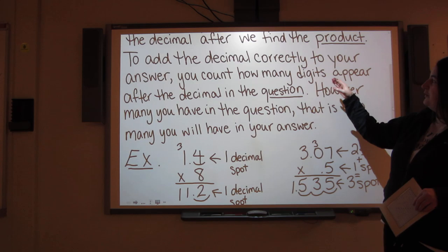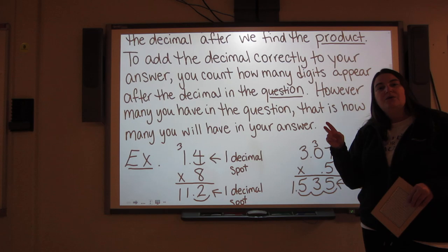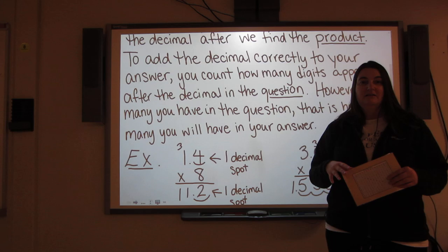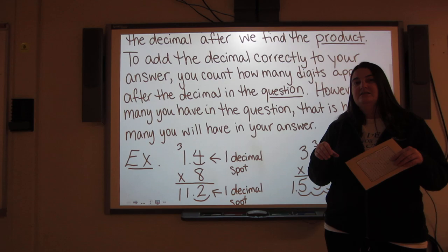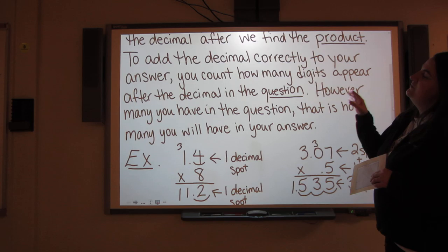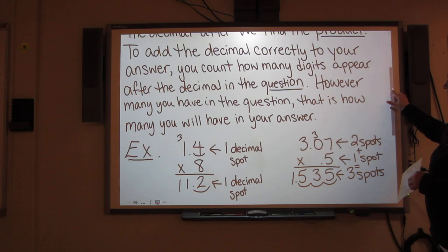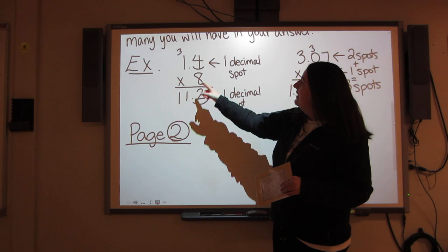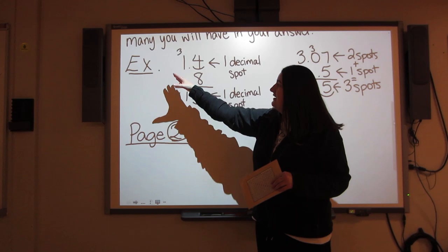How do you add the decimals once you have your final product? To add the decimal correctly to your answer, you count how many digits appear after the decimal in the question. You look at both of the factors that you're multiplying together. If they have decimals, you count how many digits are after the decimal in both of the factors. However many you have in the question, that's how many you're going to have in the answer.